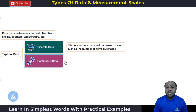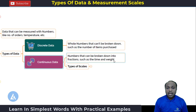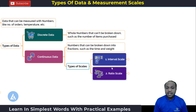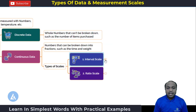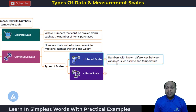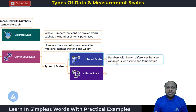When we talk about continuous data, these are numbers that can be broken down into fractions, such as time and weight. There are two important scales associated with continuous data: interval scale and ratio scale. In the interval scale, numbers have known differences between the variables, such as time and temperature. For example, 12.2 degrees Celsius and 12.3 degrees Celsius — there is a difference of 0.1 degrees Celsius, so an interval is present.